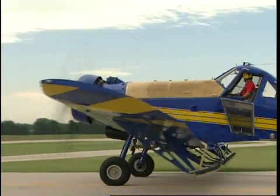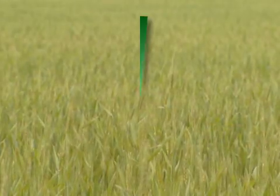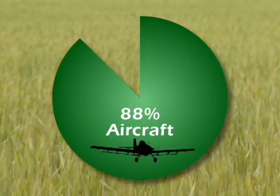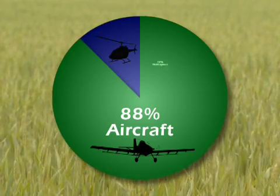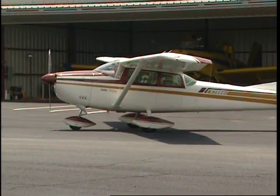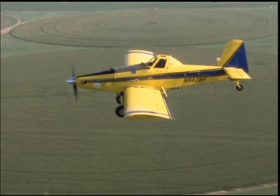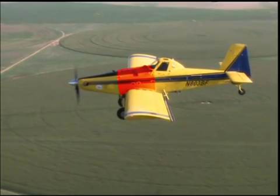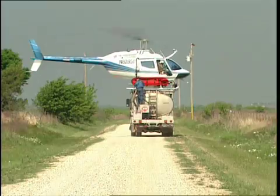Now that we've discussed why growers use agricultural aircraft, let's talk about how these aircraft are constructed for their special purpose. According to the National Agricultural Aviation Association, also known as NAAA, 88% of the aircraft used in the industry are airplanes, also known as fixed-wing aircraft. The other 12% are helicopters, also known as rotorcraft. Though comparable in size to a small passenger plane, the structure of ag planes is quite different. The payload or cargo area, which holds the material to be applied, is called the hopper, and it is located directly in front of the cockpit, above the wings of the ag plane. The helicopter hopper is located below, or behind the cockpit, and above the landing skids.